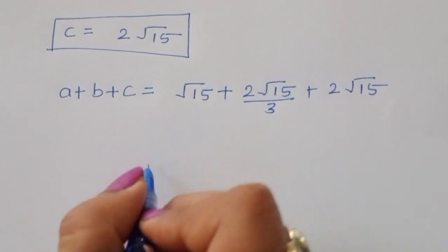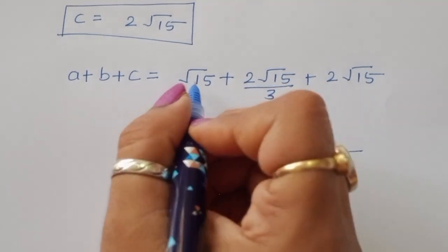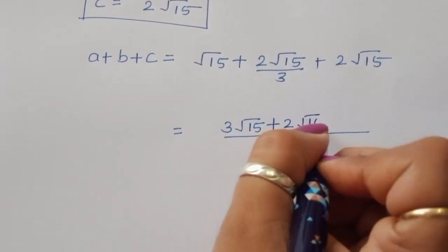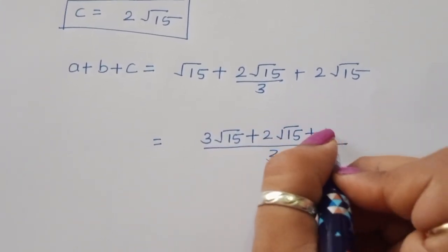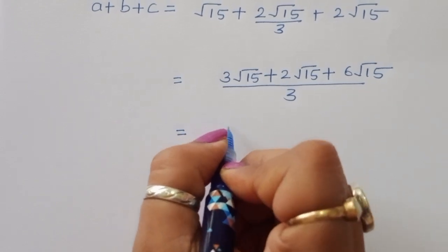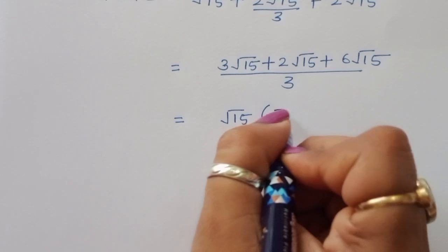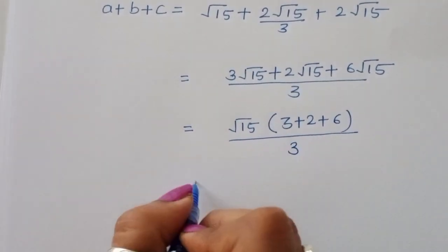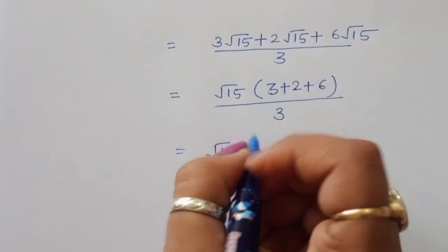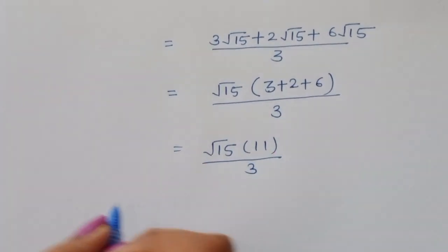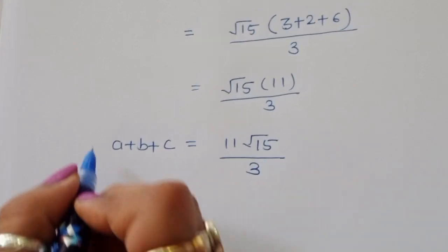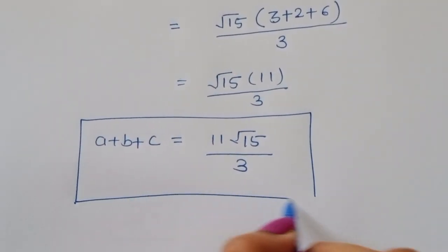Taking LCM as 3, we get 3 square root of 15 plus 2 square root of 15 plus 6 square root of 15, all divided by 3. Taking square root of 15 common, we have square root of 15 times (3 plus 2 plus 6) divided by 3, which equals square root of 15 times 11 divided by 3. So the value of A plus B plus C equals 11 square root of 15 divided by 3. Thank you.